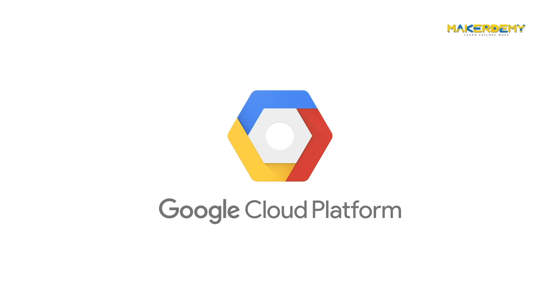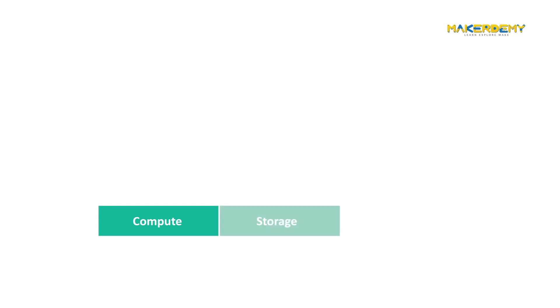Like most cloud providers, Google has an expansive set of offerings. At the bottom of the stack, we can see Compute, which is the most critical part of the cloud infrastructure. Next, we have Storage, which provides durability and persistence to applications. Then we have the Network, which enables communications across multiple applications and services.